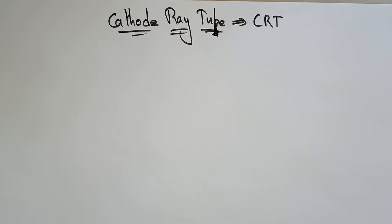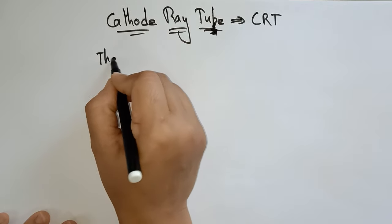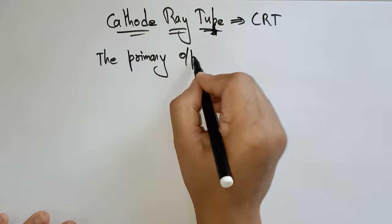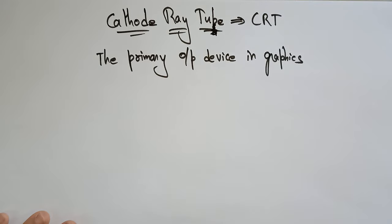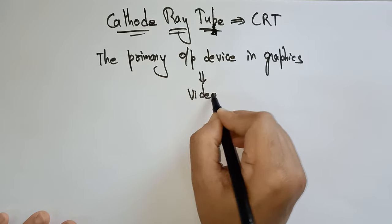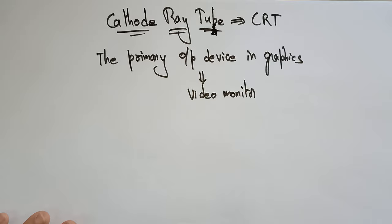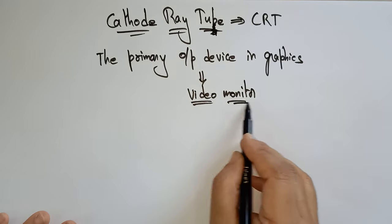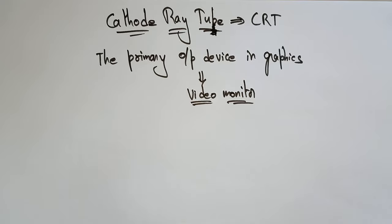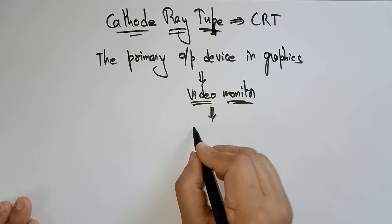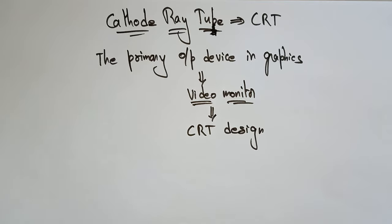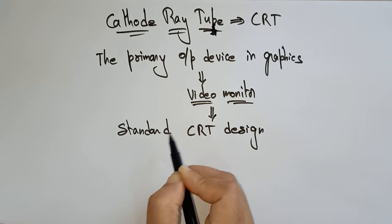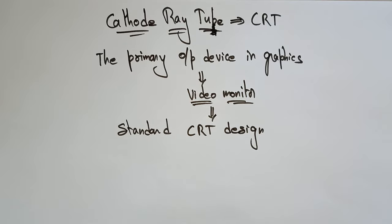What is the primary output device in graphics? The primary output device in a graphics system is a video monitor. Most video monitors are completely based on the standard CRT design. Even though there are advanced video monitors nowadays, most of them work on the standard CRT design as a base.